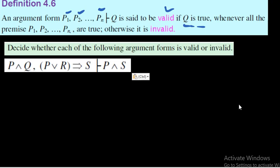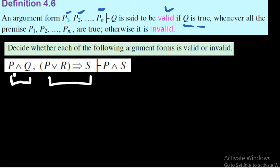Our first example asks us to decide whether each argument form is valid or invalid. The first one has two premises: p∧q, and (p∨r)→s. Each premise is taken as true, so both are considered true. We are going to examine the truth values of the conclusion.